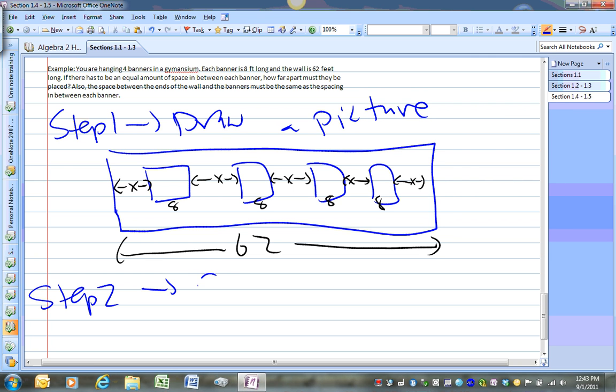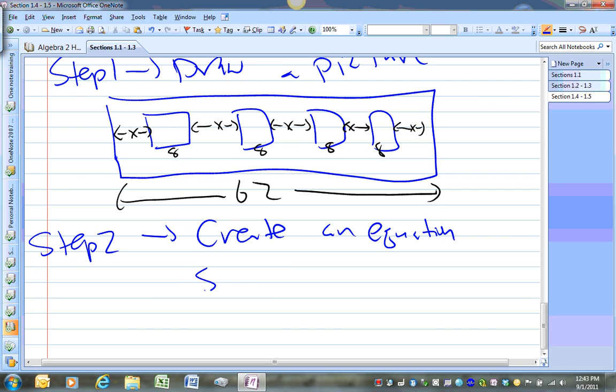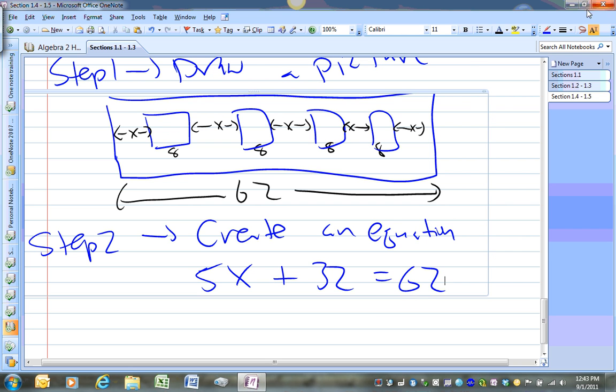Step 2 is create an equation, which would be 5x plus 32 equals 62. Notice why I'm saying 32. Because if you think about it, you have 8, 8, 8, 8,